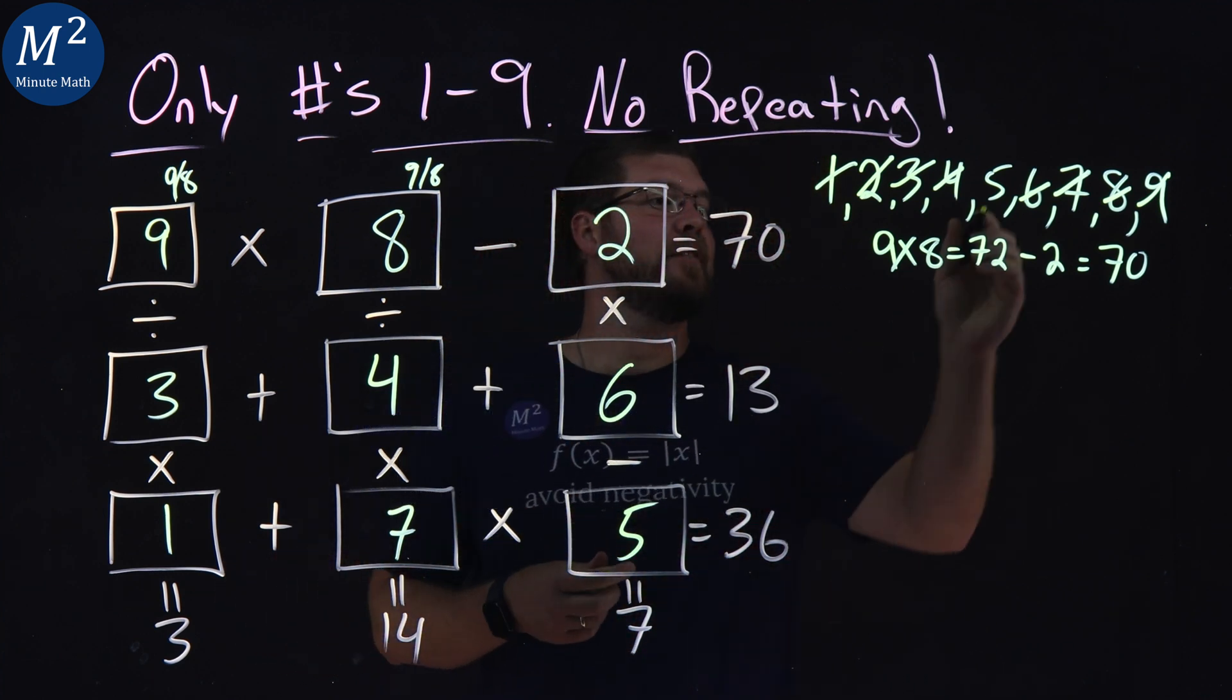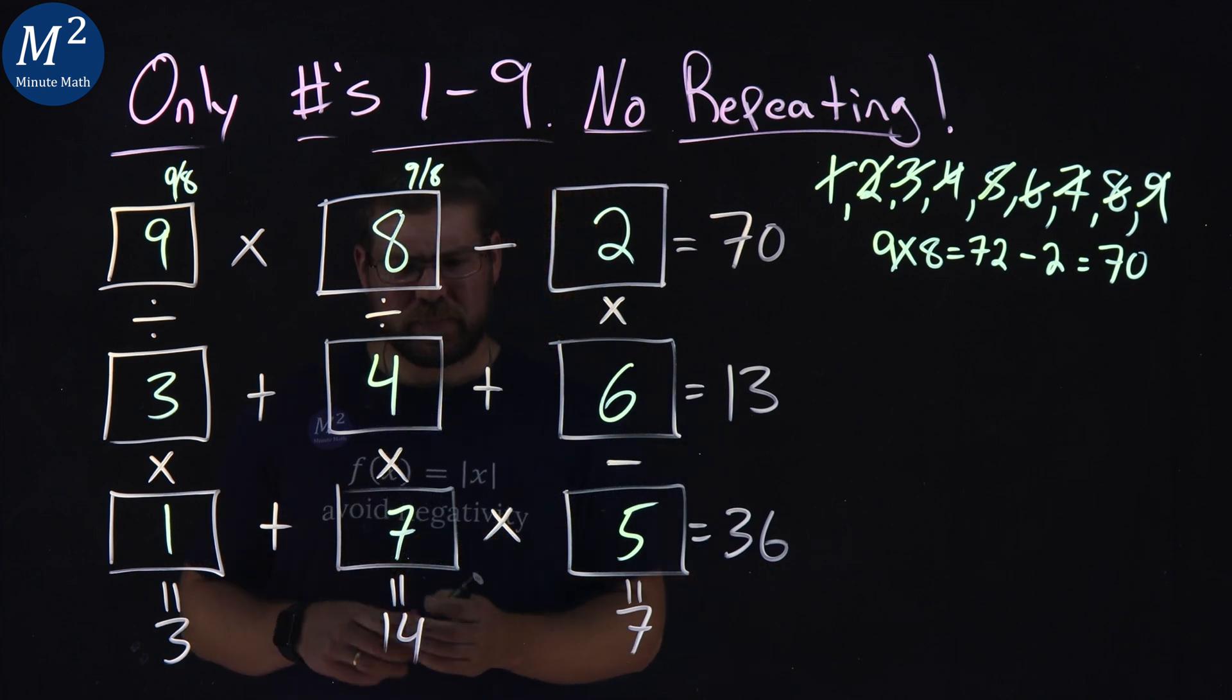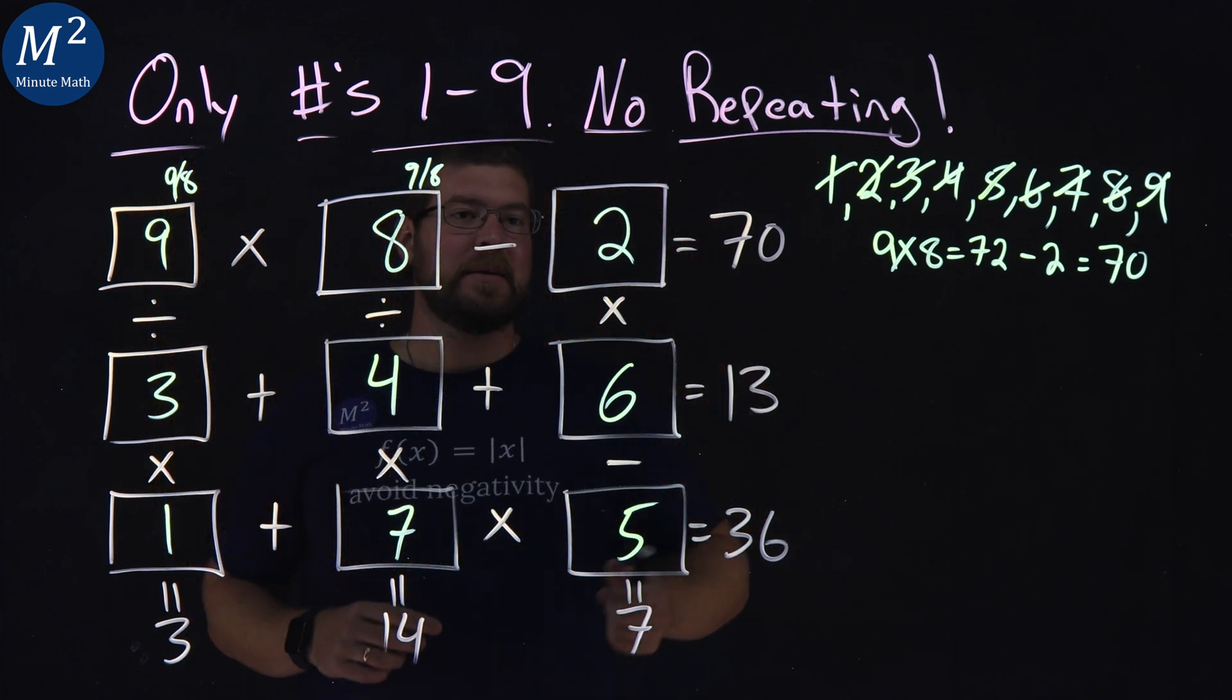We filled in all the boxes with numbers one through nine. Let's cross off the last one here, and we got them all equal.